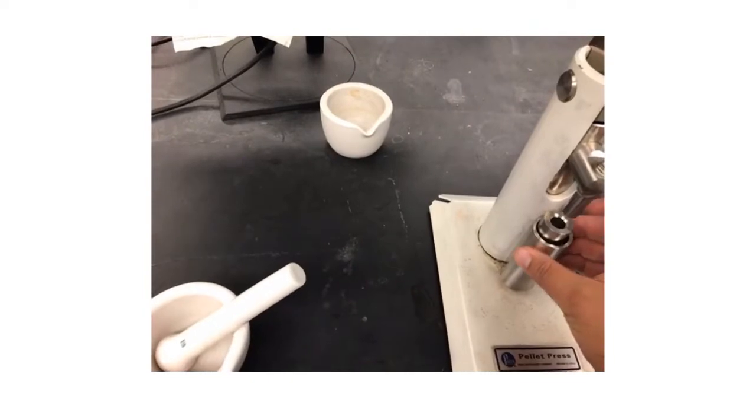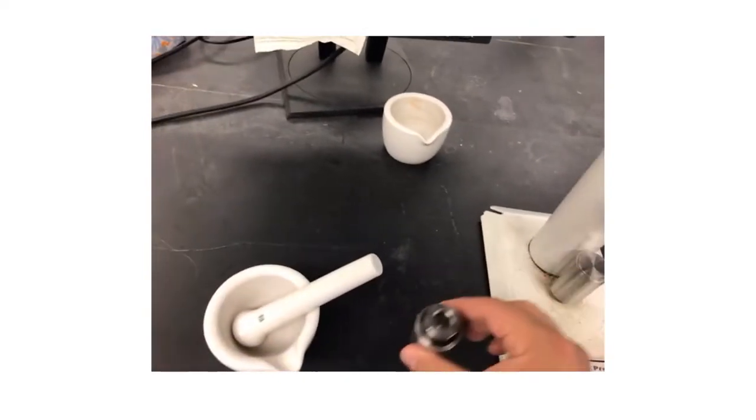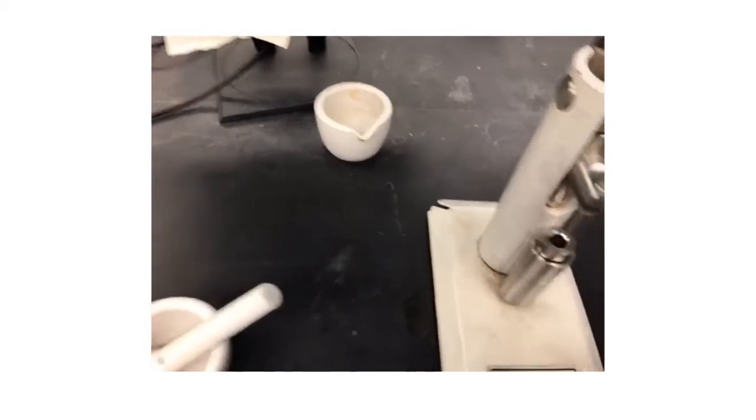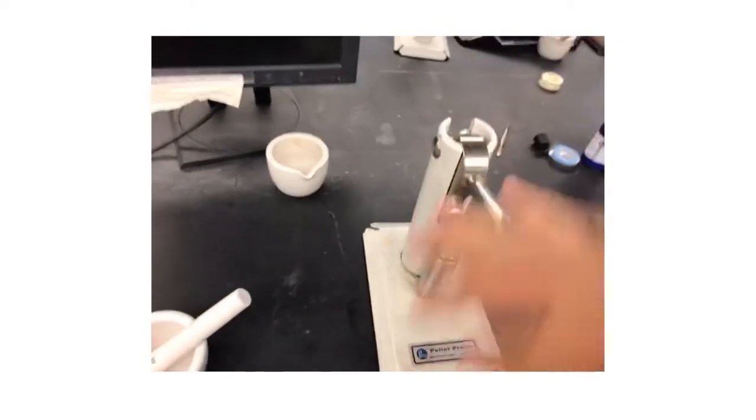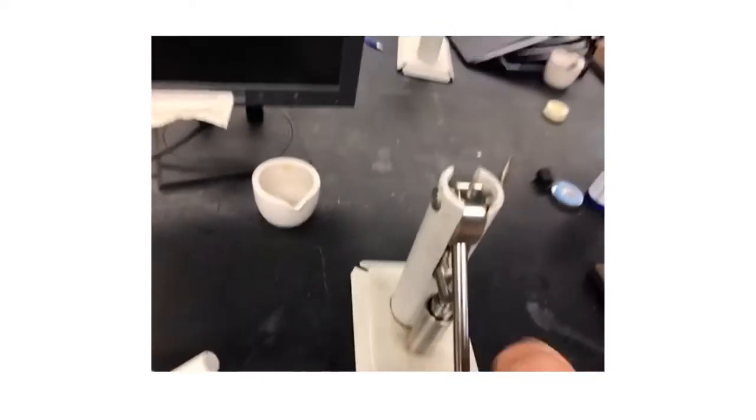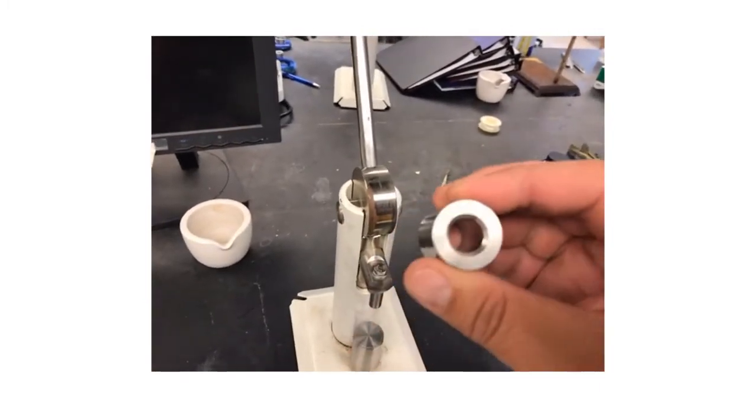So refill a second time and then that time pulverize it down—maybe give it a pound or two. Once you have your pellet, it's going to be in this press all the way to the bottom. It's going to be pretty hard to get it out.